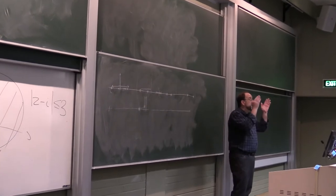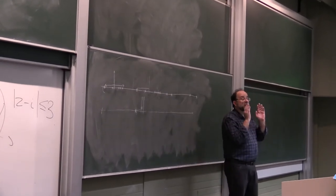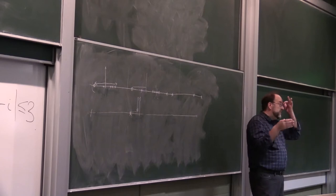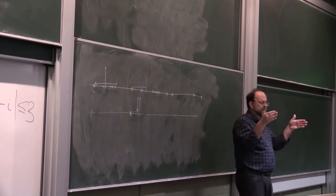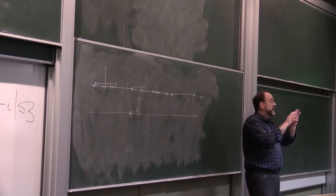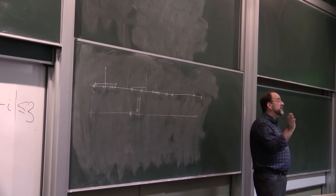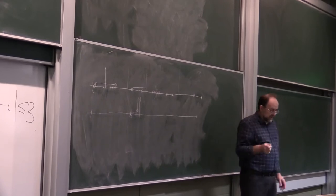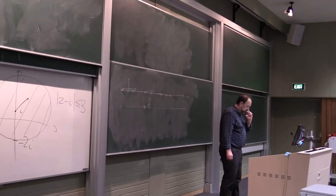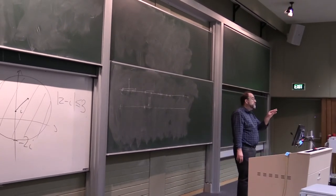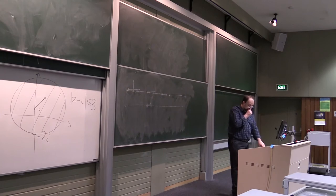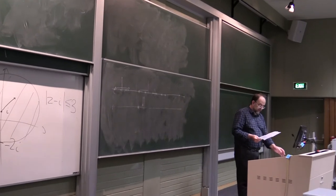Greedy from the left and greedy from the right must produce an equal number of base stations simply because they will both produce the minimal number of stations that can do the coverage, no matter how you place the stations — greedy or not greedy. By the optimality of the greedy solution, you will always produce the same number, namely the minimal possible of all possible placements.